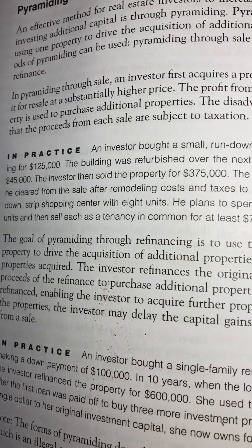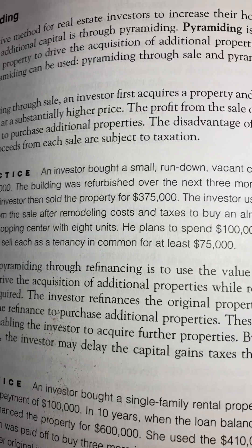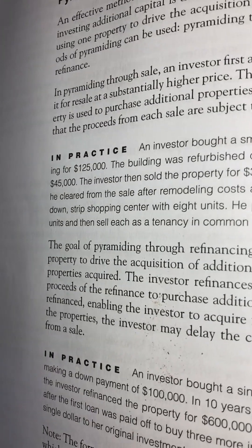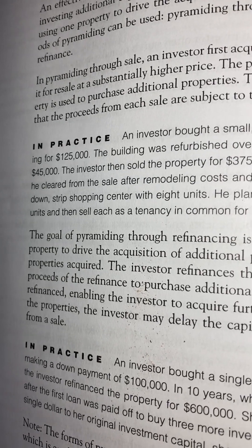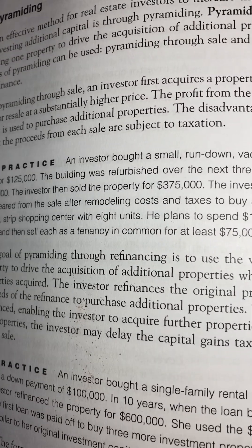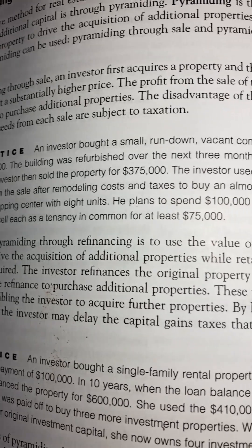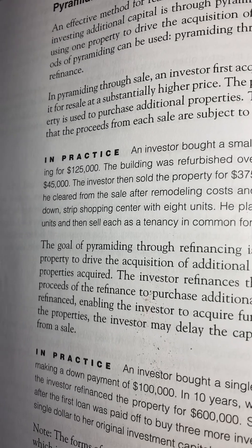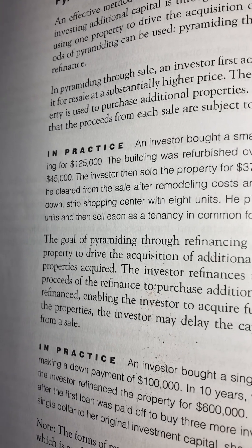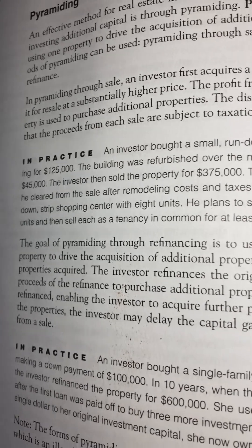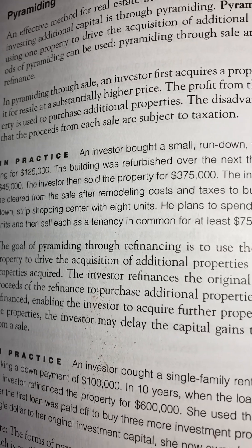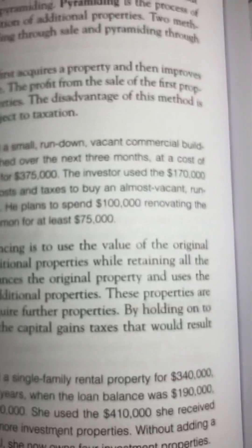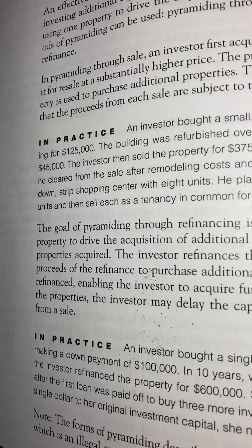In practice, an investor bought a small rundown vacant commercial building for $125,000. The building was refurbished over the next three months at a cost of $45,000. The investor then sold the property for $375,000.